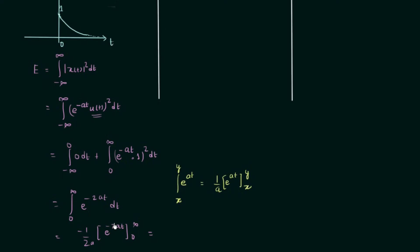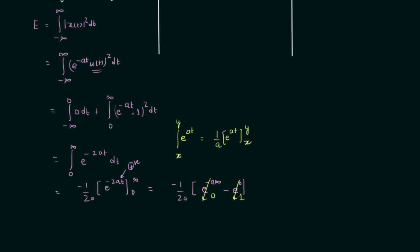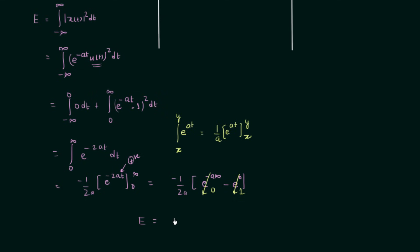Since a is positive, we evaluate the definite integral. The result is minus 1 by 2a times e raised to power minus 2at, evaluated from 0 to infinity. At the upper limit t equals infinity, e raised to power minus infinity equals 0 since a is positive. At the lower limit, e raised to power 0 equals 1. So the total energy E equals 1 by 2a, which is finite.